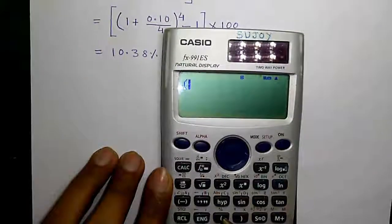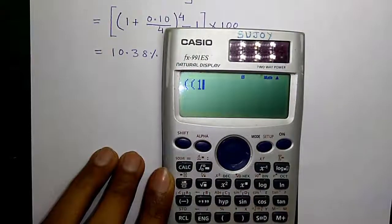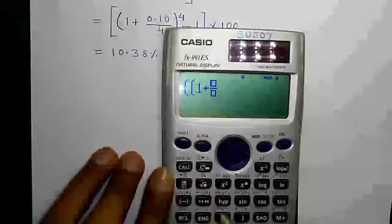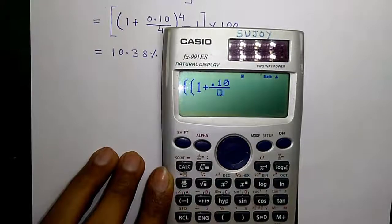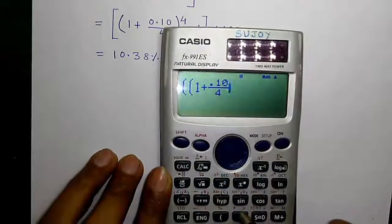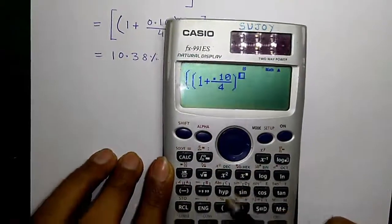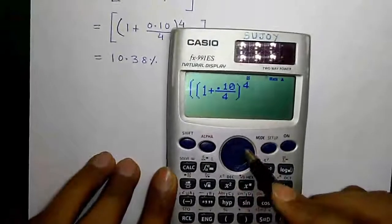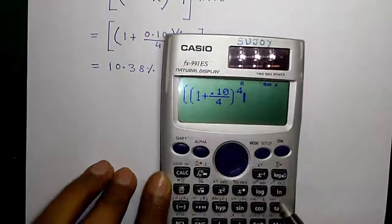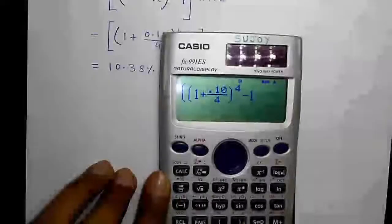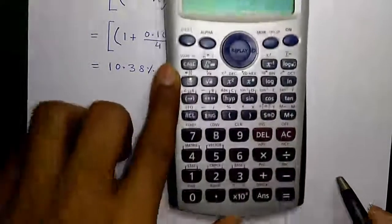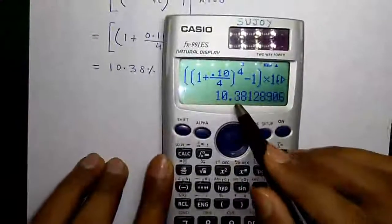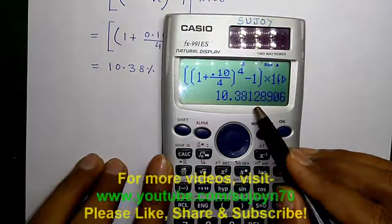For EAR, press bracket twice. 1 plus fraction 0.10 divided by 4 to the power 4 to the right minus 1 bracket close into 100 equals to is 10.38%.